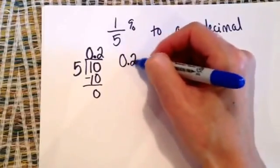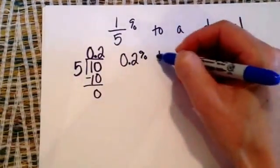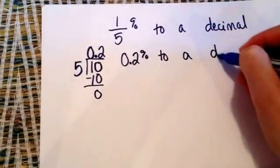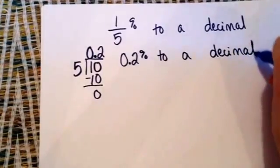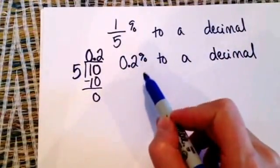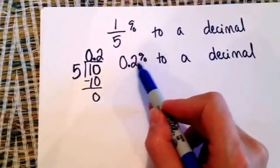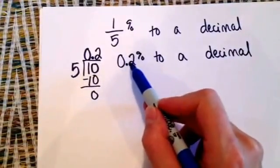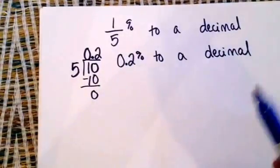So that means 0.2% needs to be turned into a decimal. Now you might be thinking, yeah, but it is a decimal. No, it's actually not because of the percent. So in order to change a percent to a decimal, that means we're going to be dividing by 100.